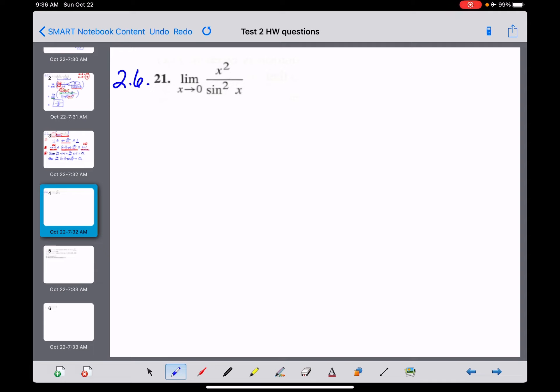The first problem I see right here is the squareds. We've got an x squared and we've got a sine squared of x. Now, if you guys recall, the only limit that I told you guys that you needed to know was the limit as x approaches zero of the sine of x over x, which is equal to one.